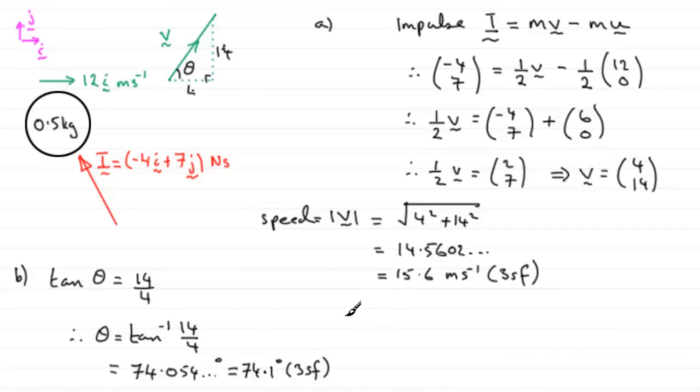Now in part C, let's just come down here. For part C, we've got to work out the change in kinetic energy by the ball as a result of the impact. Well the change in kinetic energy is going to be the final kinetic energy minus the initial kinetic energy.